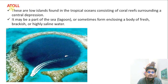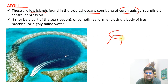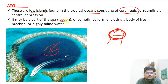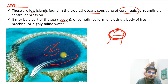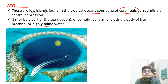Atolls are lower islands found in tropical oceans consisting of coral reefs. These islands are surrounded by coral reefs with a central depression forming a sea lagoon. They are used for tourism and recreational purposes. Many atolls are found in the Indian Ocean in the Maldives. The water within the lagoon is brackish or highly saline.